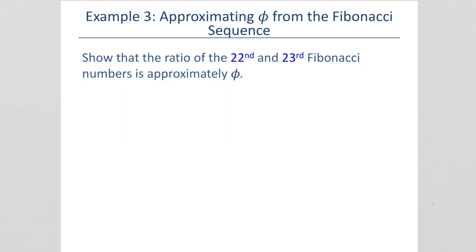Show that the ratio of the 22nd and 23rd Fibonacci numbers is approximately phi. So, we found the 22nd and 23rd numbers. The 23rd was 17,711. The 22nd number was that. The 23rd number is 28,657. So, if we take 28,657 and divide by 17,711, you get 1.618, which is very, very close to the golden ratio.